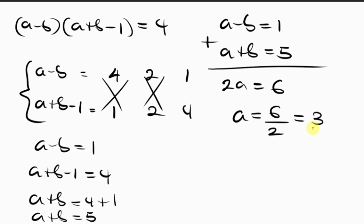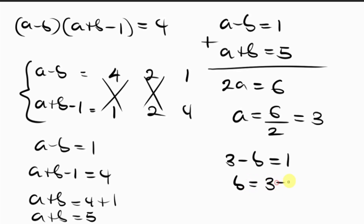Substituting a equals 3 into the first equation, a minus b equals 1, gives 3 minus b equals 1, so b equals 2.